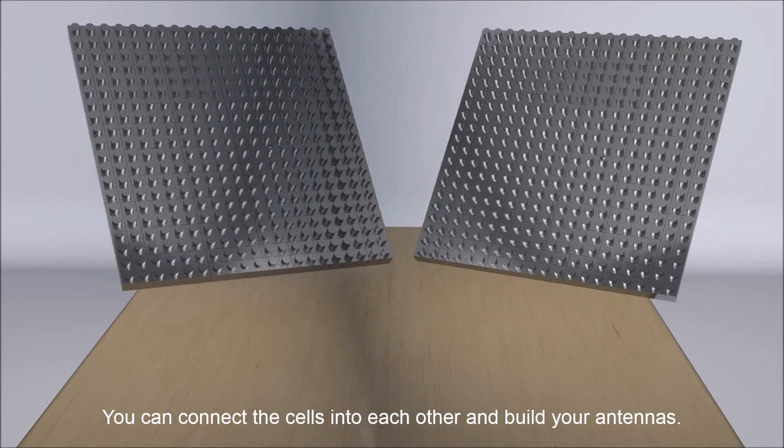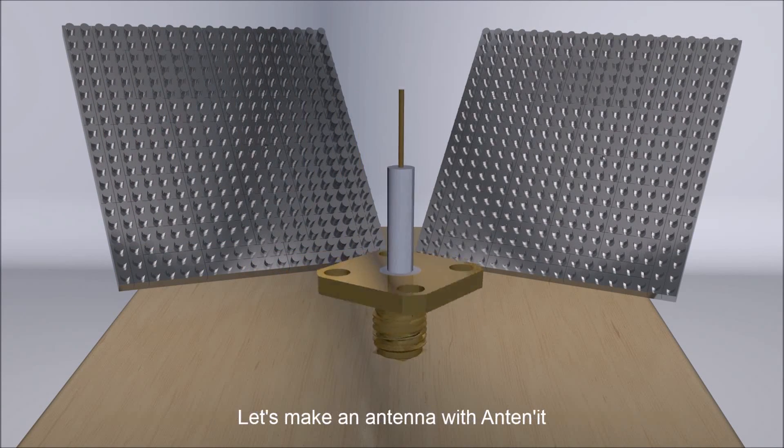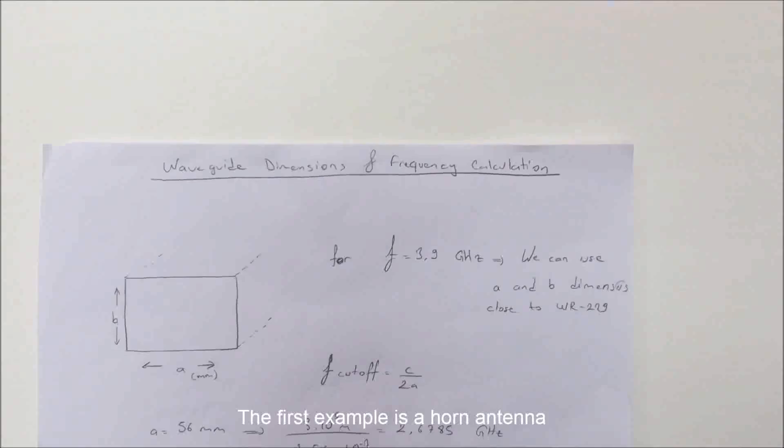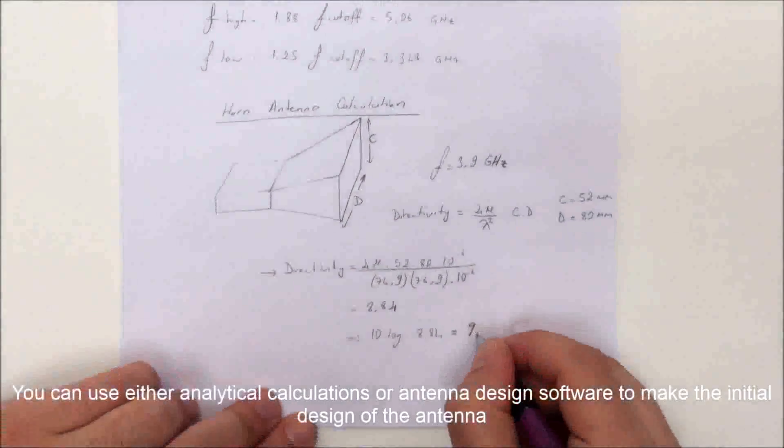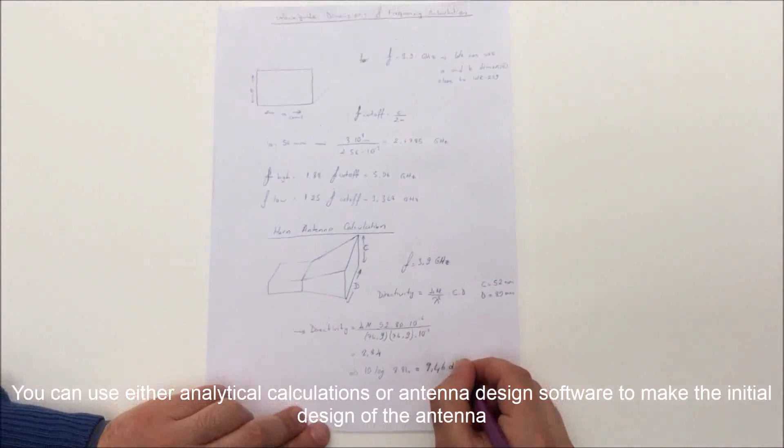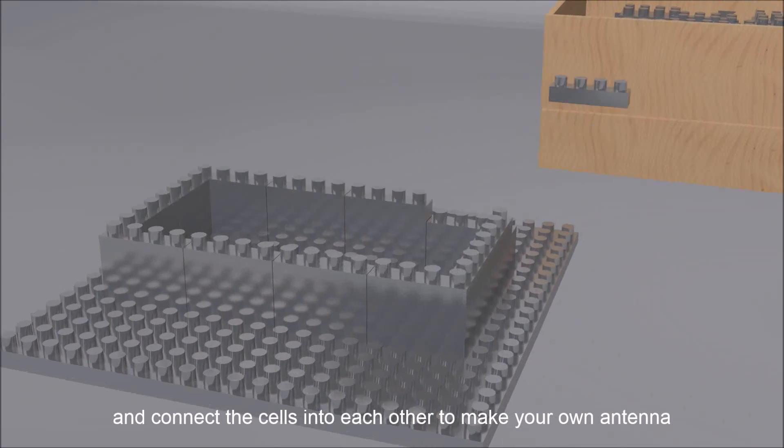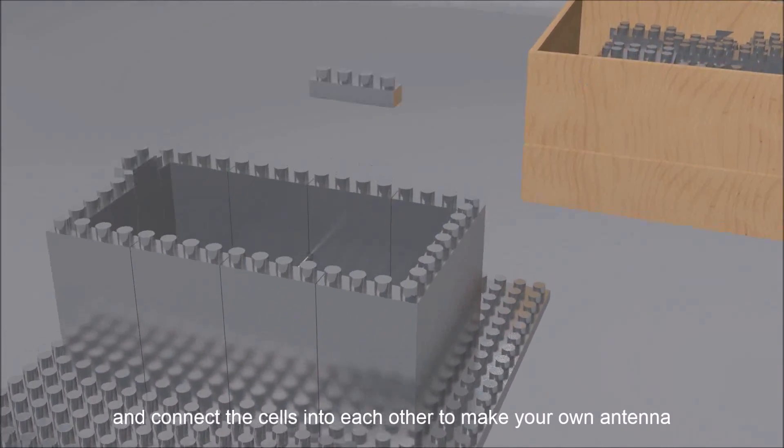You can connect the cells into each other and build your antennas. Let's make an antenna with Antennate. The first example is a horn antenna. You can use either analytical calculations or antenna design software to make the initial design of the antenna, and connect the cells into each other to make your own antenna.